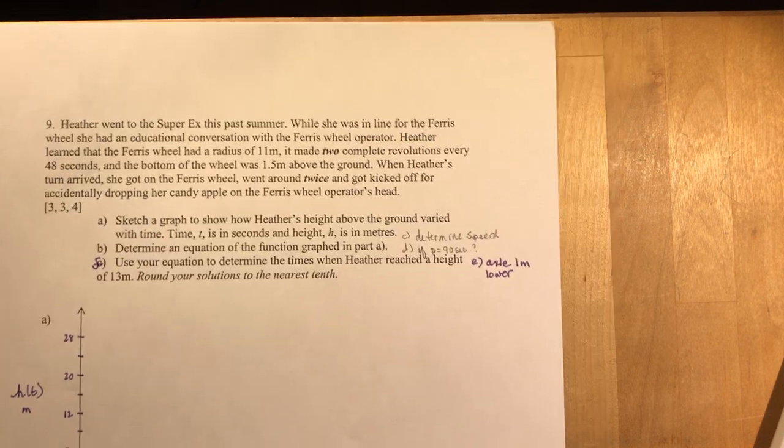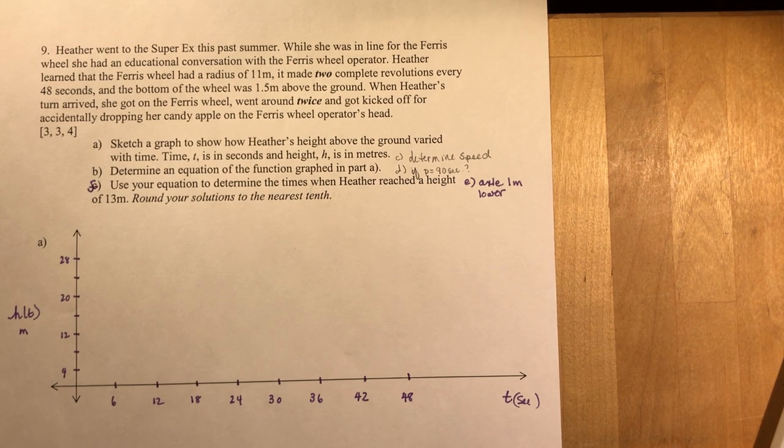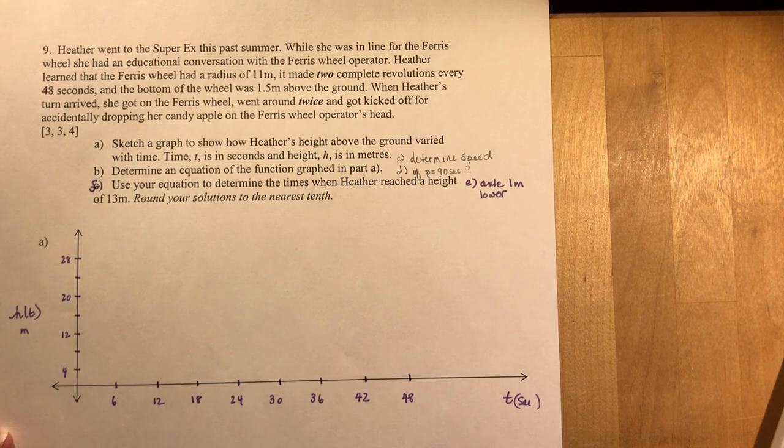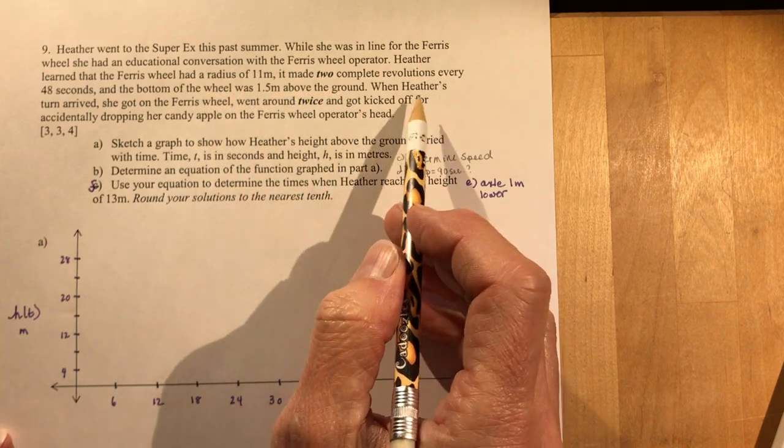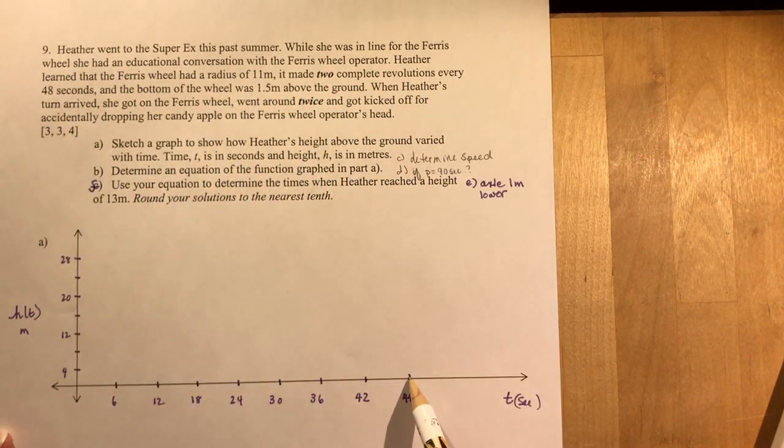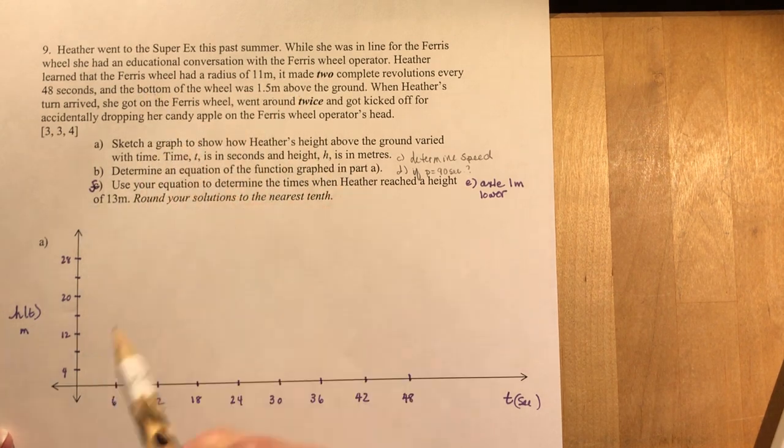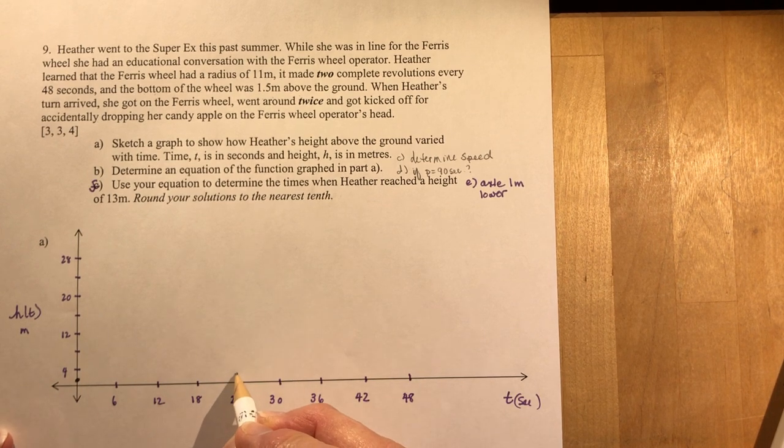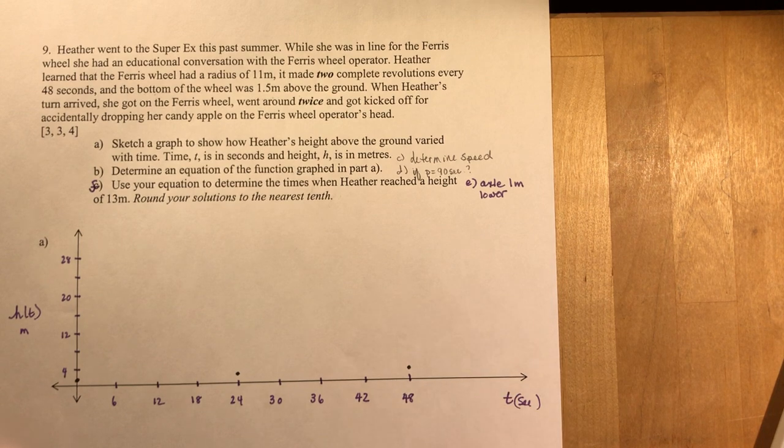And here's the hardest one. It's a Ferris wheel question. Very popular questions in this section. And the question asks you to talk, it's all about a girl named Heather who goes to the Super X. She gets on the Ferris wheel. She goes up, she goes down. She makes two revolutions every 48 seconds. They give you all the information here that you need to know.